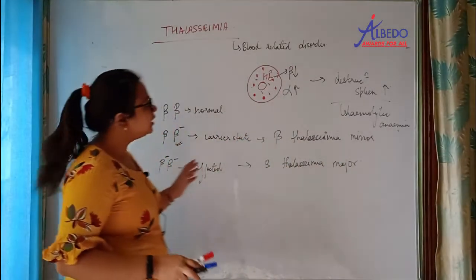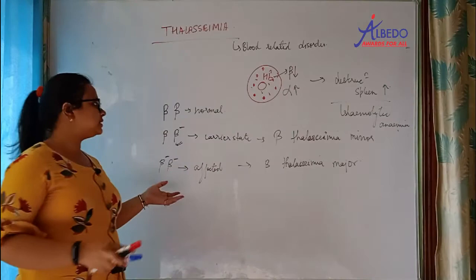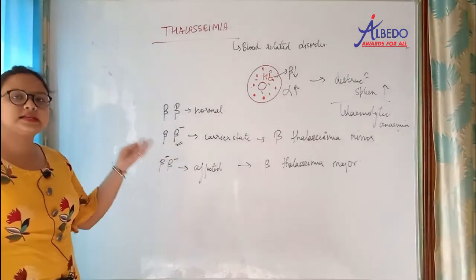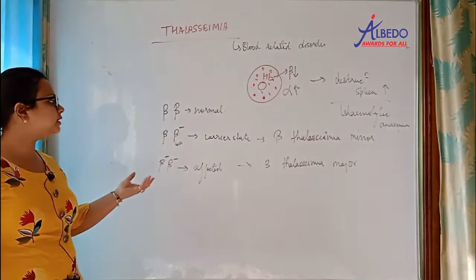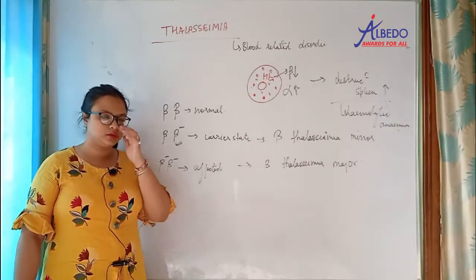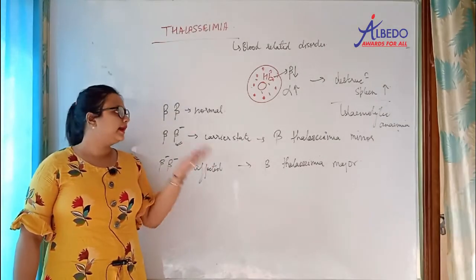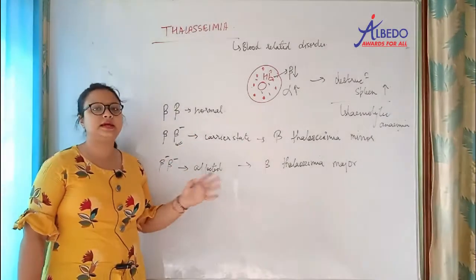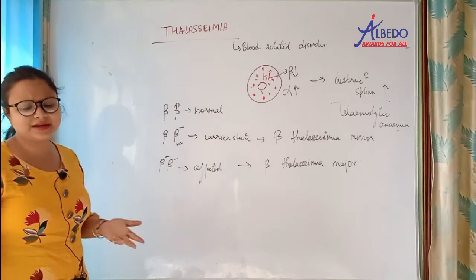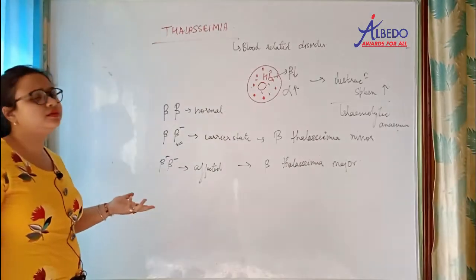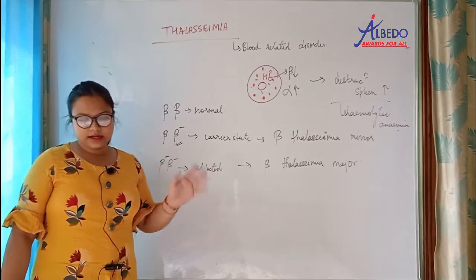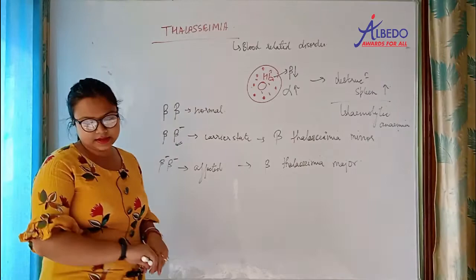To summarize thalassemia: for the alpha chain there are 4 genes, and for the beta chain there are 2 genes. Alpha thalassemia is less encountered clinically, but beta thalassemia can be diagnosed. Here we will end with thalassemia.